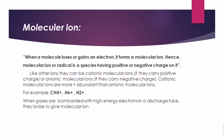Molecular ions are chemically reactive — they attract opposite charges. When a molecule loses electrons, it forms a molecular ion, which may be a radical species having positive or negative charge. If they carry a positive charge, they are cationic molecular ions; if negative, they are anionic molecular ions. Cationic molecular ions are more abundantly occurring than anionic molecular ions. Examples include methane, helium, and nitrogen in their molecular ion form — all carrying a positive charge.